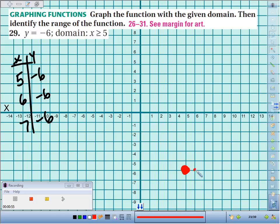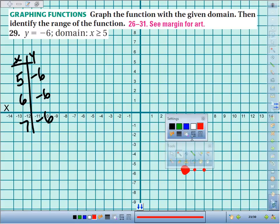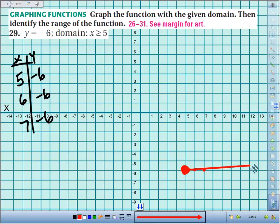Then we've got 6 negative 6, 7 negative 6. So you can see, when I create this, it's going to make a ray. It's going to stop here and go forever in this direction.